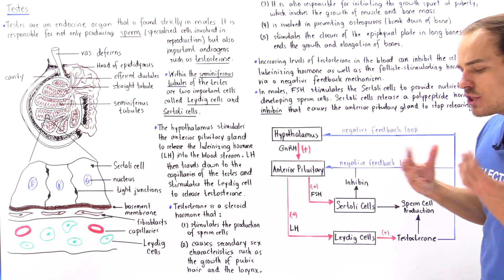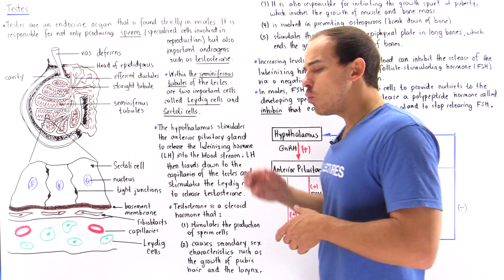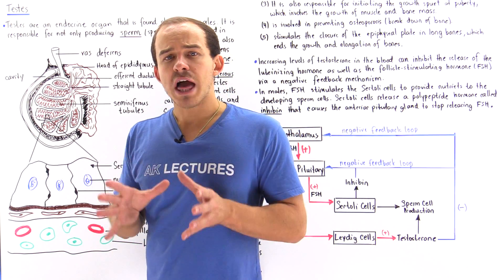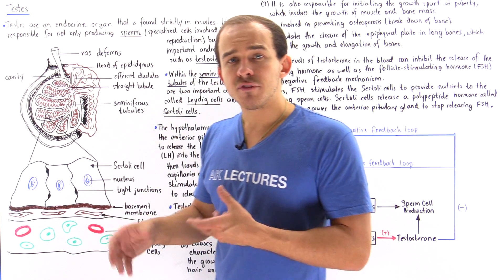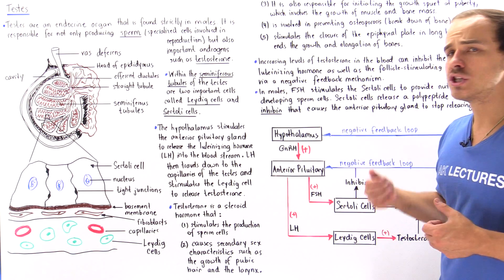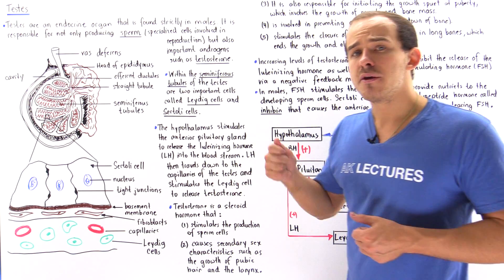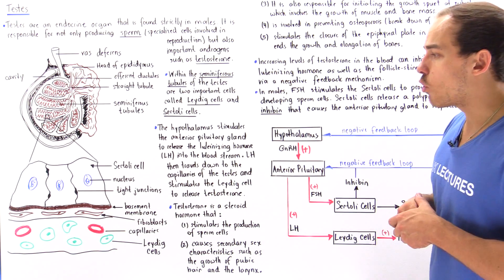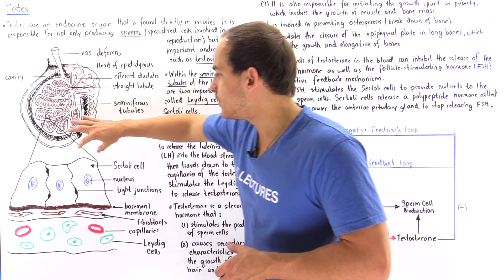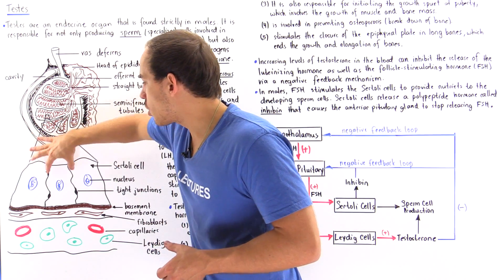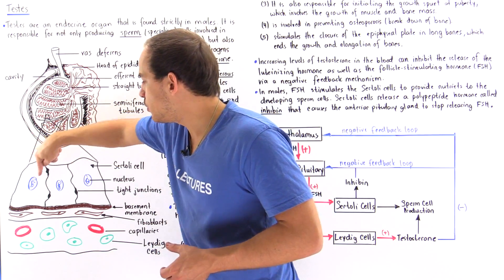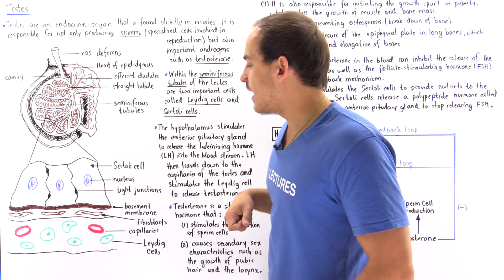Within our seminiferous tubules, we have two very important types of cells that are involved in sperm production as well as in the production of our androgens — the male sex hormones. So we have Sertoli cells, which are these large cells shown that contain the blue nuclei as shown.